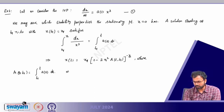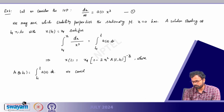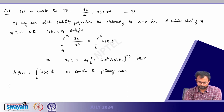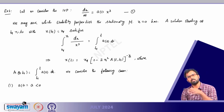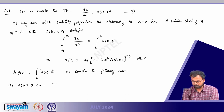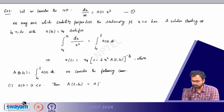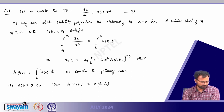Case 1: Let a(t) = A, a negative constant, for all t. Then A(t, t₁) = A·(t − t₁). Since t − t₁ is positive but A is negative, the product A·(t − t₁) is less than or equal to 0.